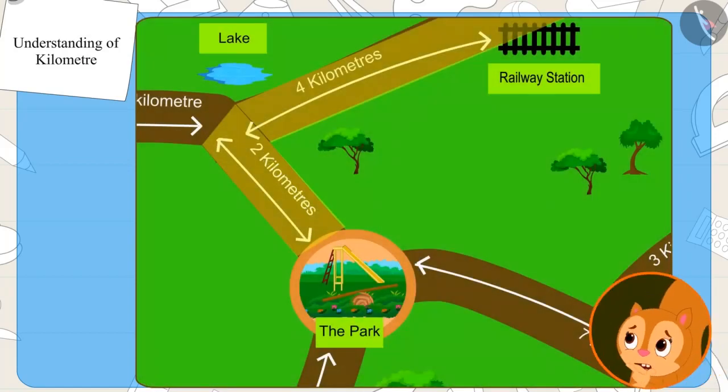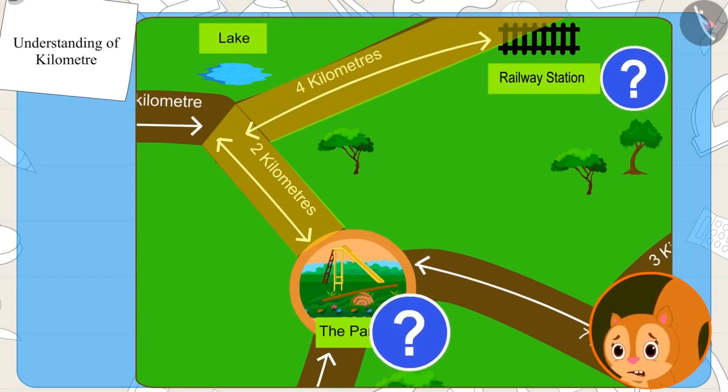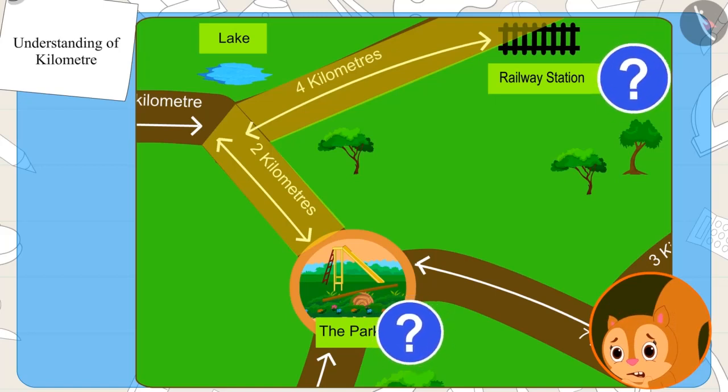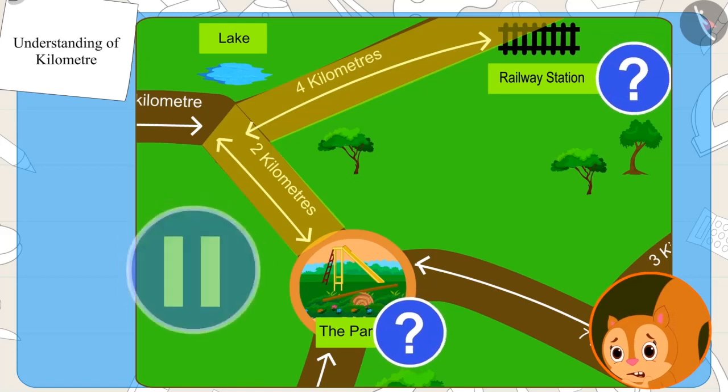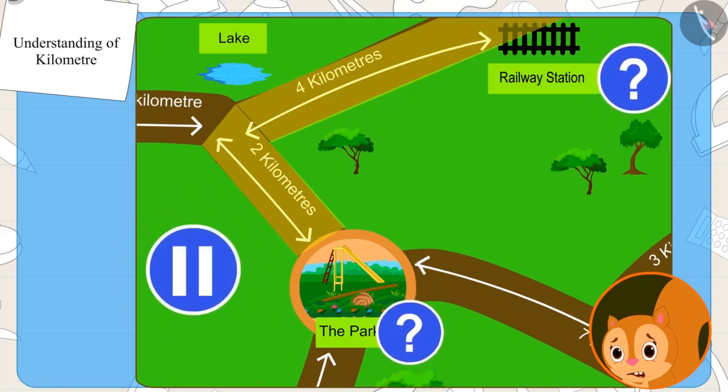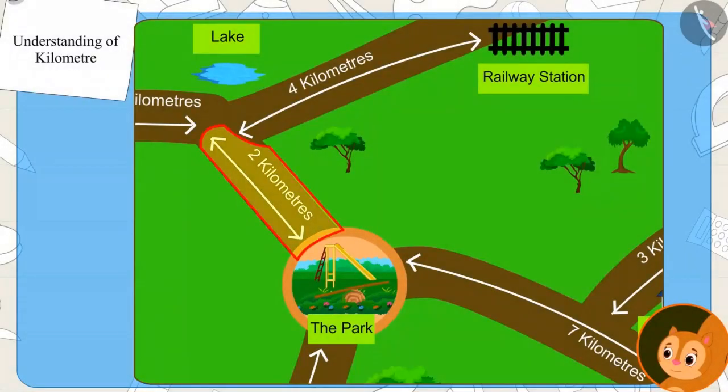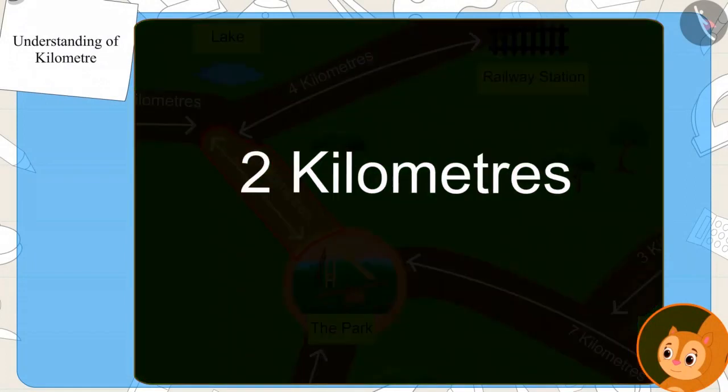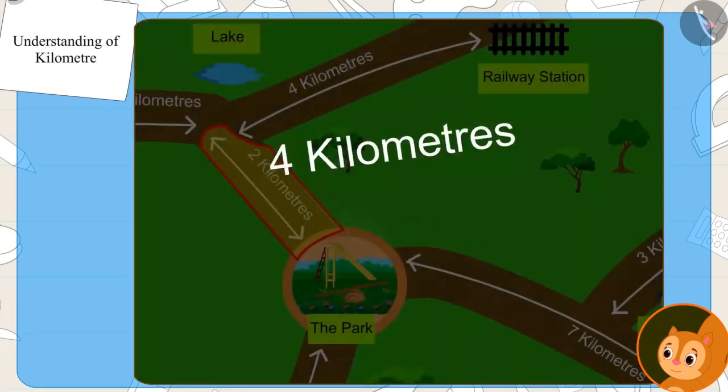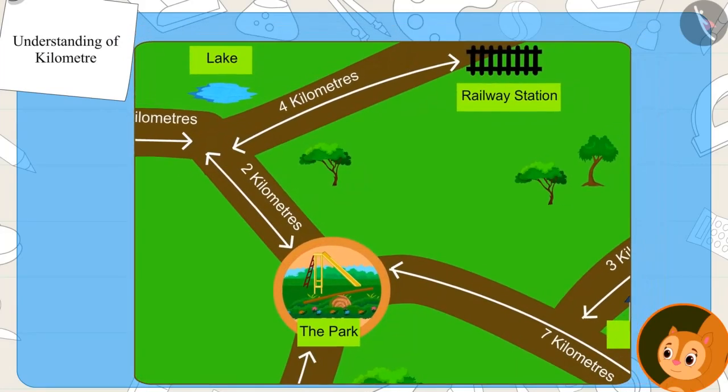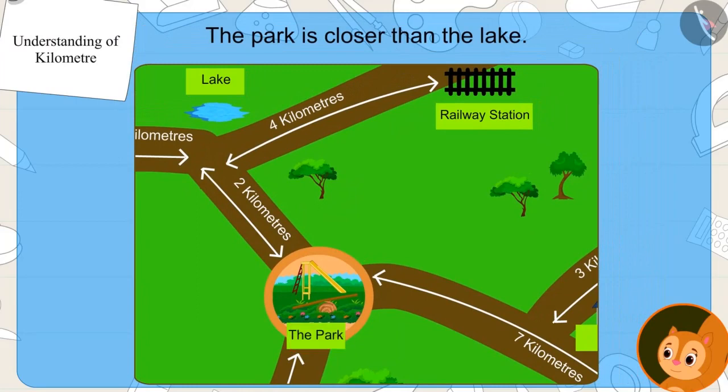Now Chanda is thinking that which place is closer to the lake? Railway station or park? Kids, can you help Chanda find the answer to this question? If you want, you can pause the video and find the answer. Well done kids! The answer you found is correct. Because two kilometers is less than four kilometers, hence the park is closer to the lake.